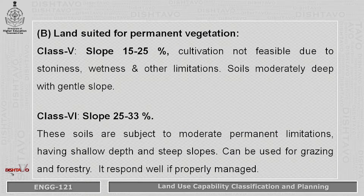Part B covers land suited for permanent vegetation, that is class 5 to class 8. Class 5 has a slope varying from 15 to 25 percent. Cultivation is not feasible due to stoniness, wetness, and other limitations.